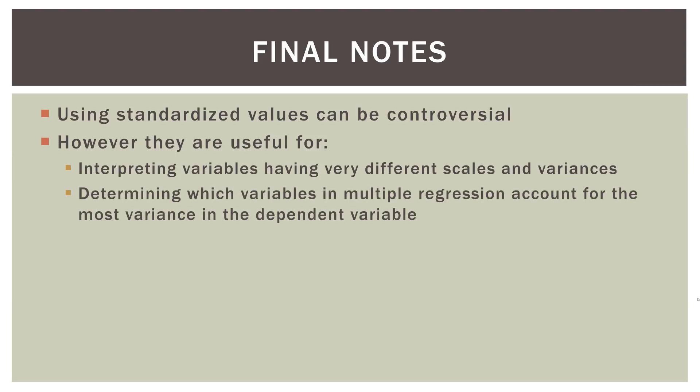So determining which variables—and this is about multiple regression—determining which variables in multiple regression account for the most variance in the dependent variable. When we're talking about multiple regression and figuring out which variable contributes to the overall model and how much variance it explains, using standardized values in the interpretation can greatly help with that because it takes out the elements of units and scales. So making decisions on which variables offer the most bang for the buck relative to each other. This can actually tell you which variables contribute to the overall model and which you may want to eliminate.